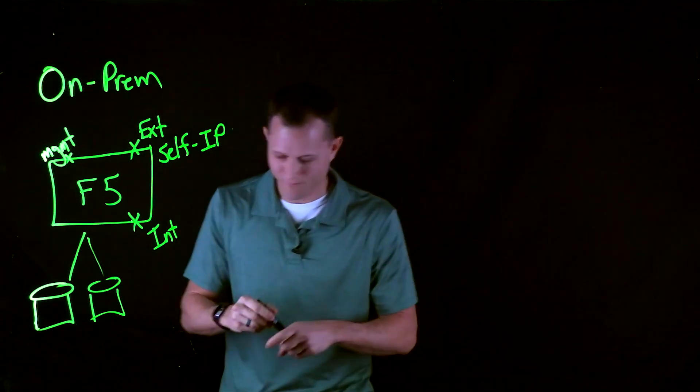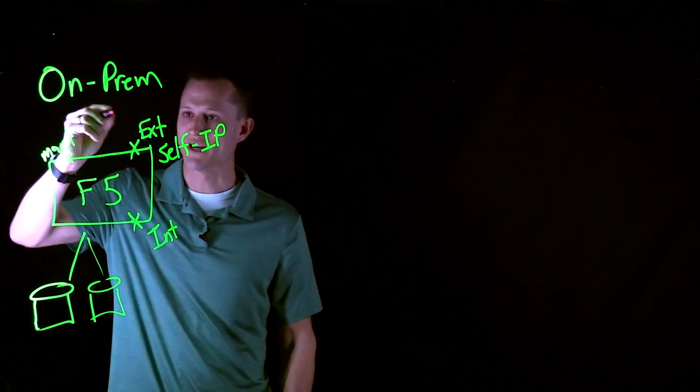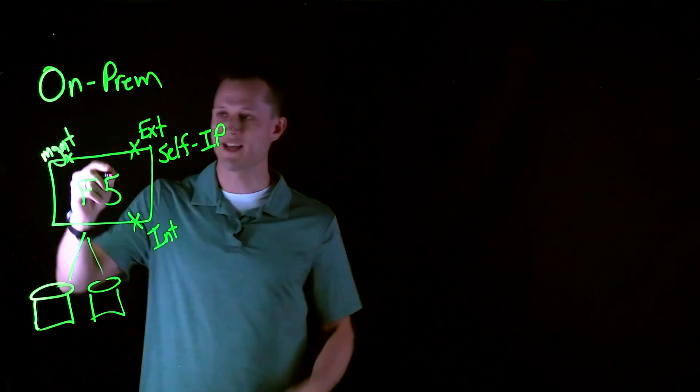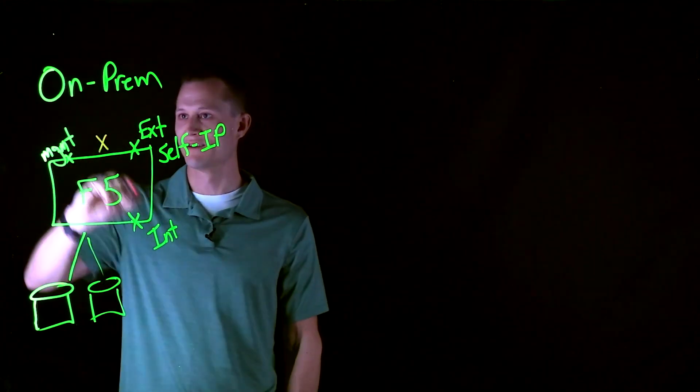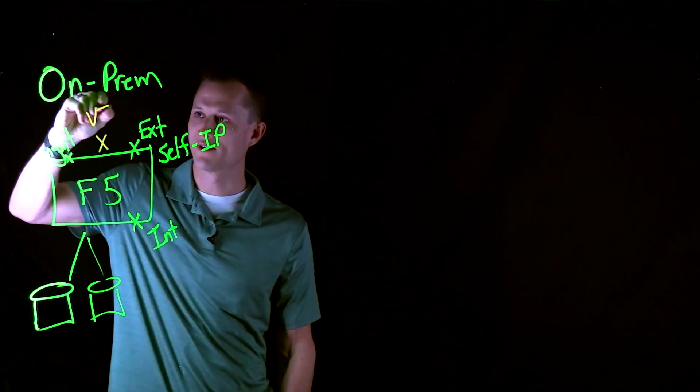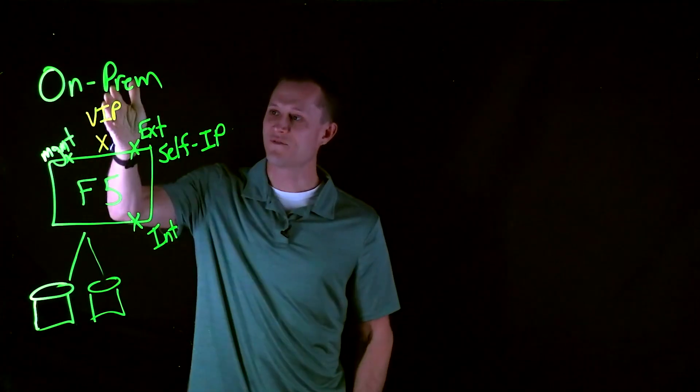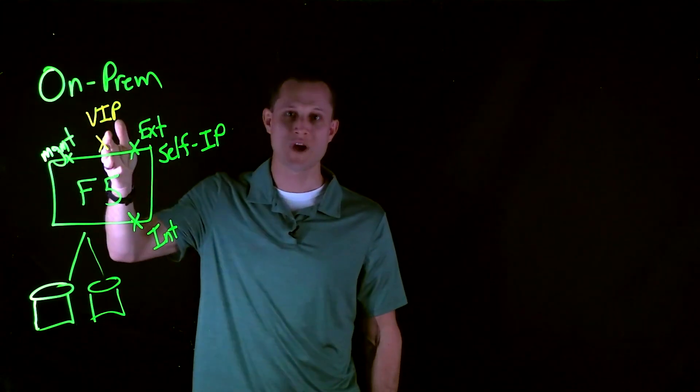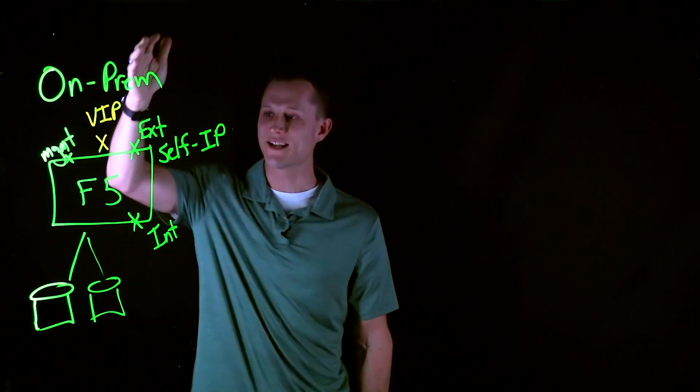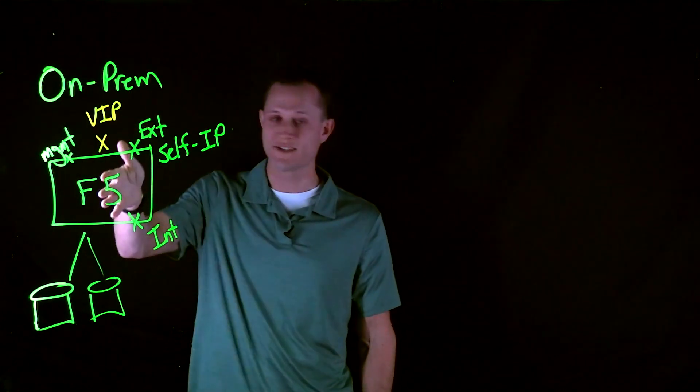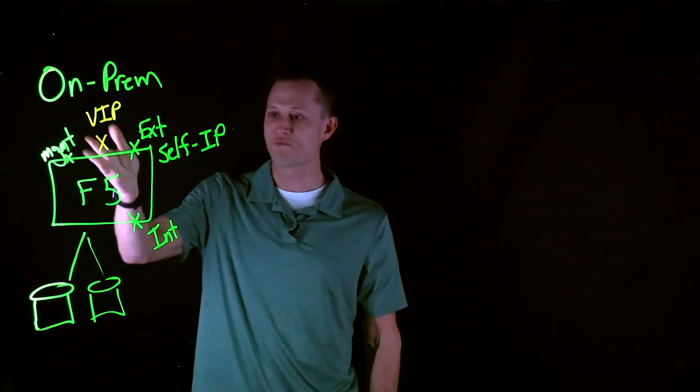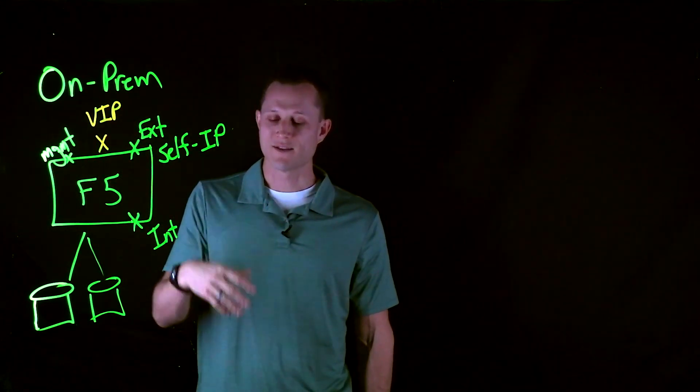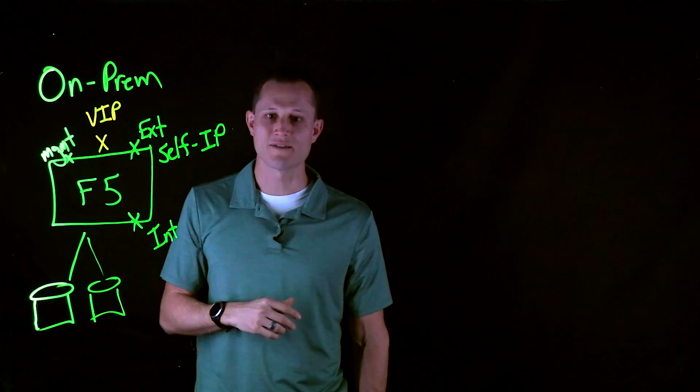But we also have what's called a floater address. And this is our VIP address. This is our application address. So, let's just put this here, and we'll call this our VIP. This VIP will be either a static route or some kind of dynamic routing within the on-prem network, and that allows the F5, whether it's a single F5 in this picture or an HA device, to properly float those addresses over and allow communication to flow during a failover event.